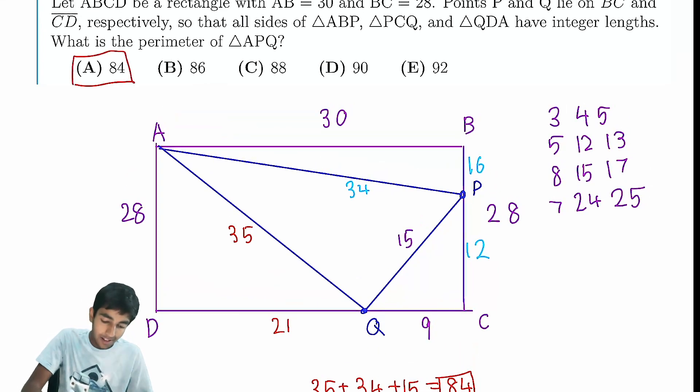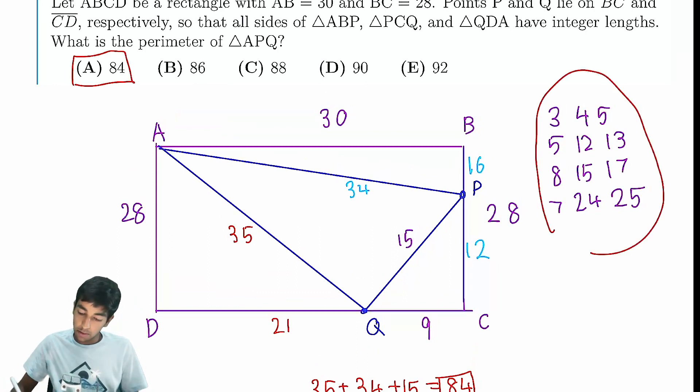The key idea here is realizing that all the side lengths are integers, so you just have to go back to your fundamental Pythagorean triples and do a little bit of guessing. But it's really not much guessing if you know your Pythagorean triples. Because when you scale them up by a factor, they're also Pythagorean triples. Thanks for watching!